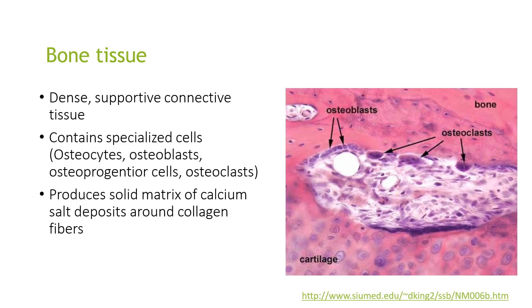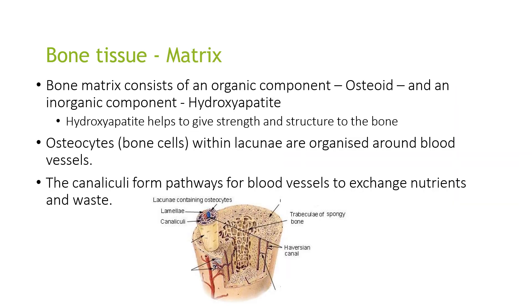Bone tissue is dense supportive connective tissue and contains specialised cells known as osteocytes, osteoblasts, osteoprogenitor cells and osteoclasts. These produce a solid matrix of calcium salts deposited around collagen fibres. The bone matrix consists of an organic component called osteoid and an inorganic component known as hydroxyapatite. Hydroxyapatite helps to give strength and structure to the bones. Osteocytes and bone cells form lacunae organised around the blood vessels, and canaliculi form pathways for blood vessels to exchange nutrients and waste.